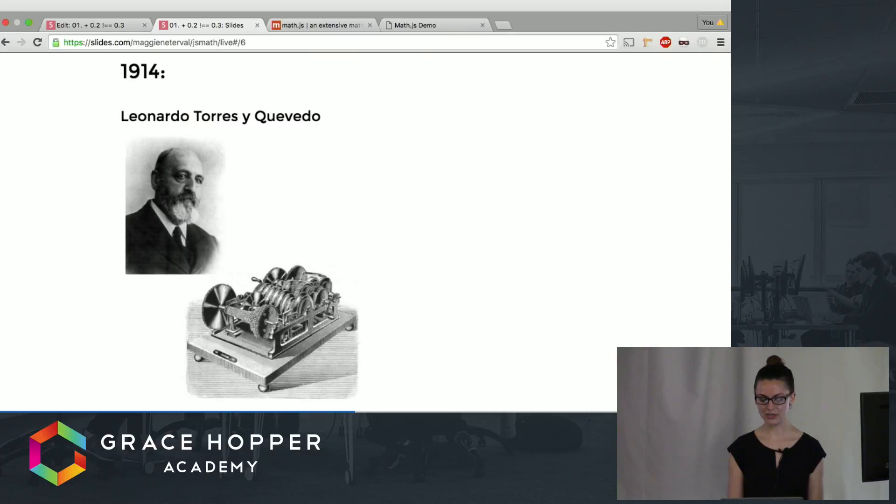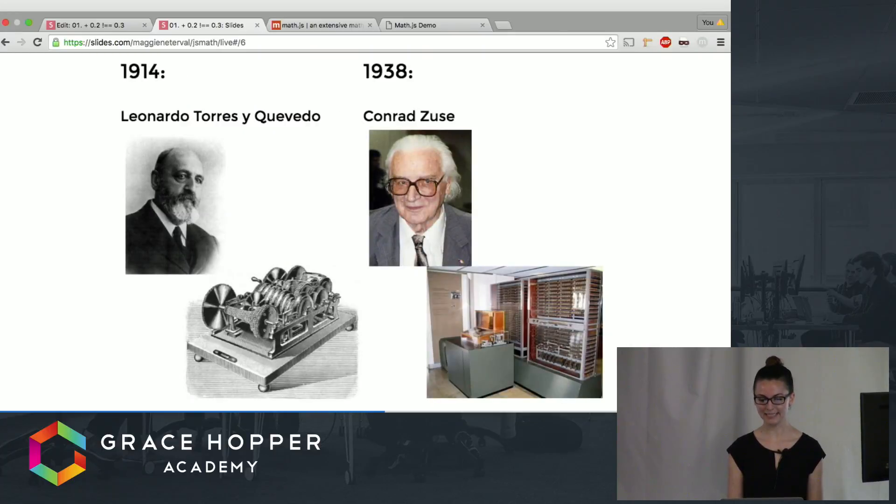So this is nothing new. Just a quick blast to the past. These lovely gentlemen were using a floating point in some of our earliest computers. On the left is one of the first programmable calculators and then on the right is one of the first computers which uses punch cards and these both implement floating point.